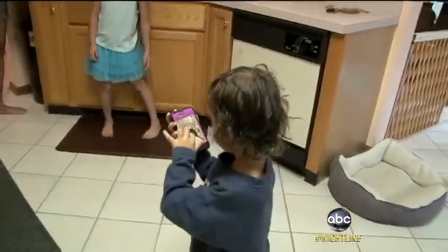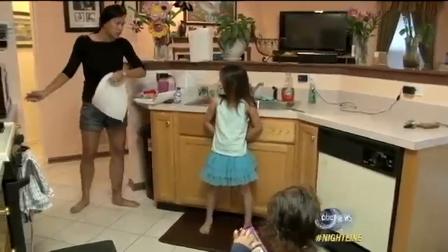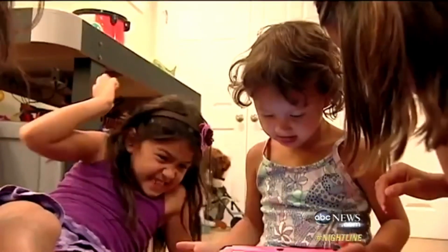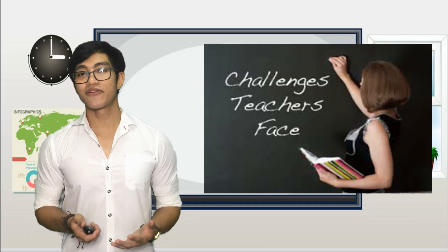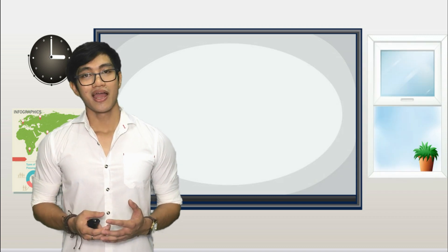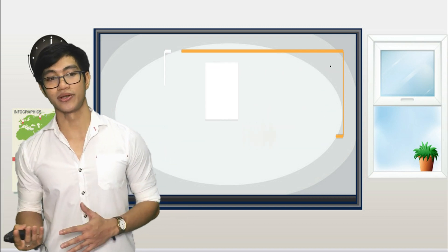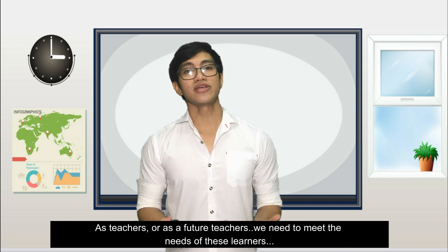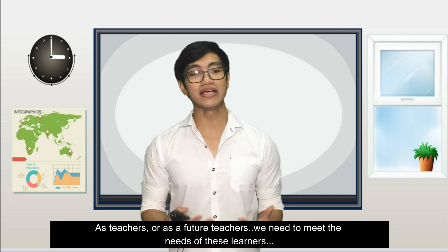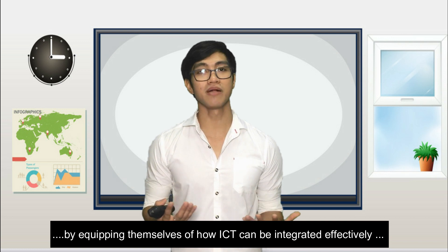Alphas learn by doing. The right way to teach young Alphas is by developing their critical thinking skills. It will be important for Generation Alpha children to be able to see problems from different perspectives. This is the generation that will co-live with advanced artificial intelligence. Generation Alpha needs to be creative. But what are the challenges teachers are facing today? This is the use of technology and the integration of educational technology and instruction. As teachers or future teachers, we need to meet the needs of these learners by equipping ourselves on how ICT can be integrated effectively in our areas of specialization.